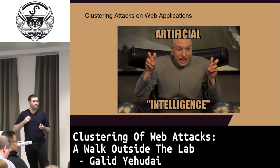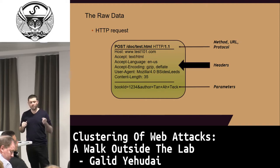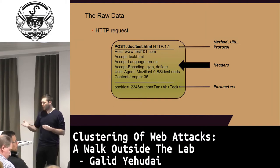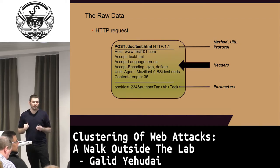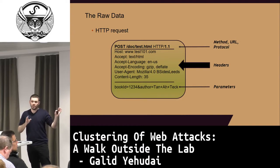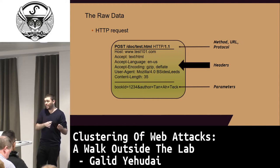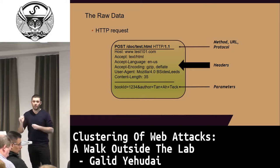Every web application attack is basically an HTTP request — that's the raw data. An HTTP request contains quite a lot of information: the method, the URL being targeted, all the headers (some more important than others), and the parameters. But looking at the raw data isn't enough — we need a method to structure it. For example, we might not need all headers; some are rarer and may just be noise. We may also need to separate parameters in the POST body from those in the query string.